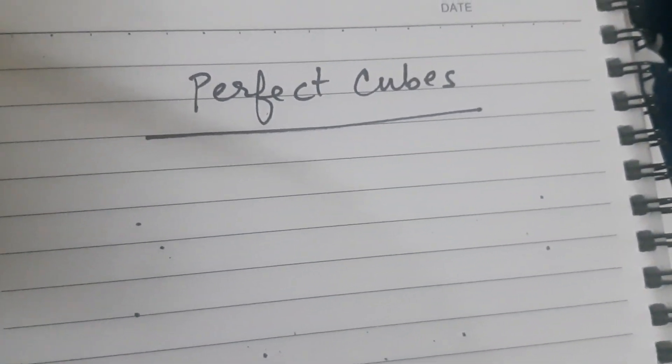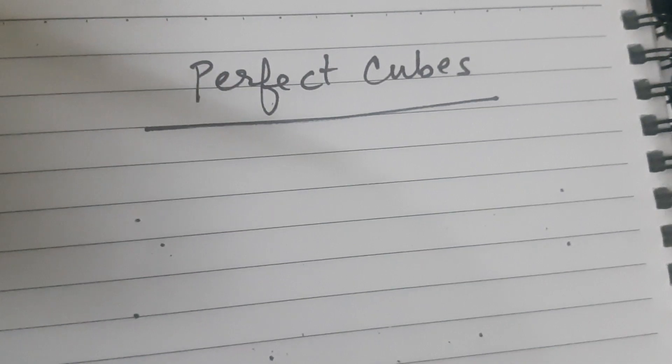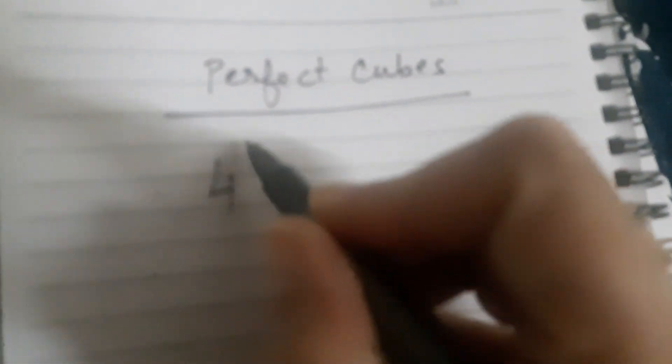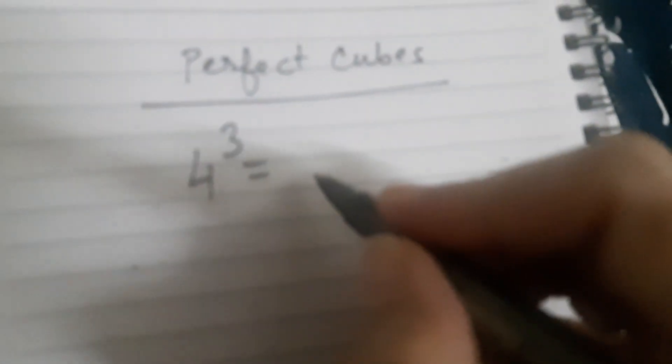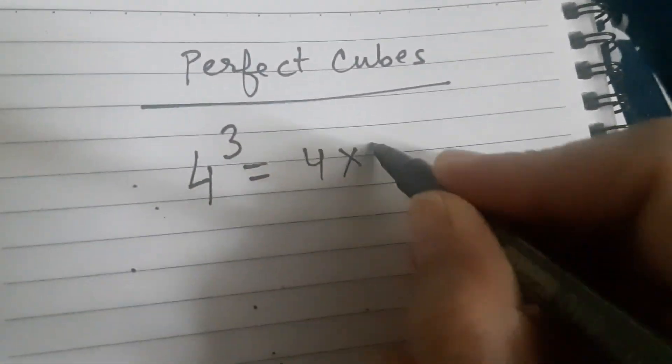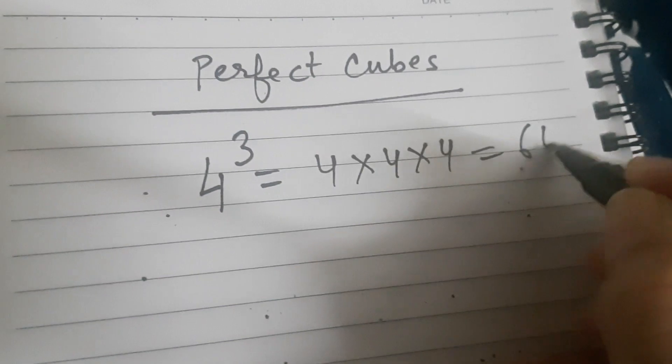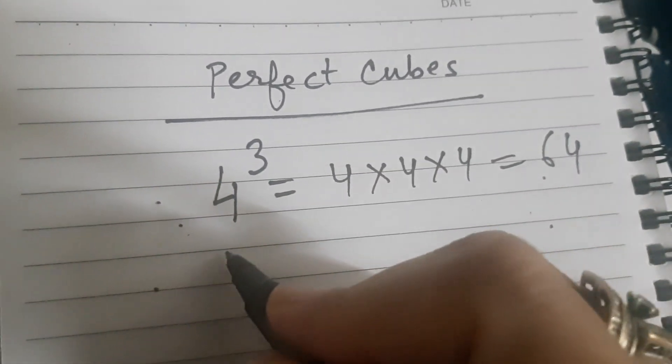Dear students, in this video I am going to share with you the definition of perfect cubes. Now tell me, what is 4 cube? 4 cube is 4 into 4 into 4, which is equal to 64.